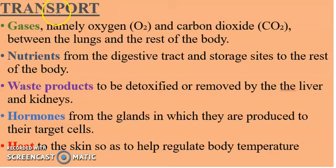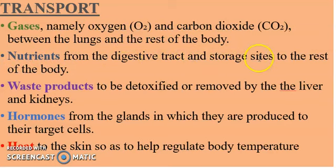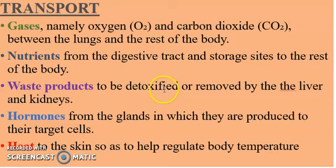In terms of transport, blood transports gases, namely oxygen and carbon dioxide, between the lungs and the rest of the body. Blood also transports nutrients from the digestive tract and storage sites to the rest of the body, meaning the nutrients obtained from the food we eat are absorbed in the digestive tract. Blood also transports waste products to be detoxified or removed by the liver and the kidneys, so waste products such as carbon dioxide and urea are eliminated from the body.